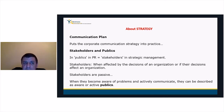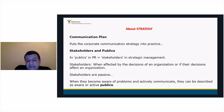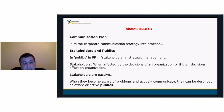Regarding stakeholders and publics: in the public relations literature the term 'publics' is used to describe what is known as 'stakeholders' in strategic management literature. These two terms are often used synonymously, but there are subtle differences. Individuals or groups are stakeholders when they affect or are affected by the decisions of an organization. Stakeholders are normally seen as passive; when they become aware of problems and actively start to communicate, they can be described as aware or active publics.